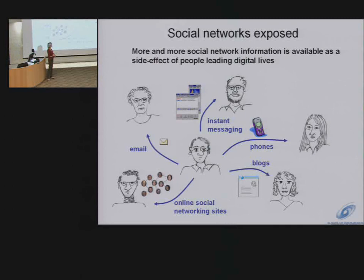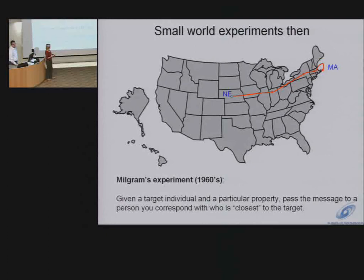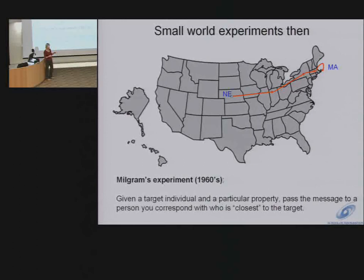First I'll talk about insights into how people search their social networks — if you want to get from one part of the network to another, how you can use your social ties to reach a person you'd like to reach. Probably most of you are familiar with the famous small world experiment from the 1960s. Stanley Milgram recruited participants from Nebraska and instructed them to mail an envelope to a target in Boston, Massachusetts. However, they couldn't just mail it directly — they needed to pass it on to someone they knew on a first-name basis. When people were asked how many hops they thought it would take, they would say hundreds. It turned out not to be the case at all — for the messages that came through, they took an average of only six hops, hence the term six degrees of separation.